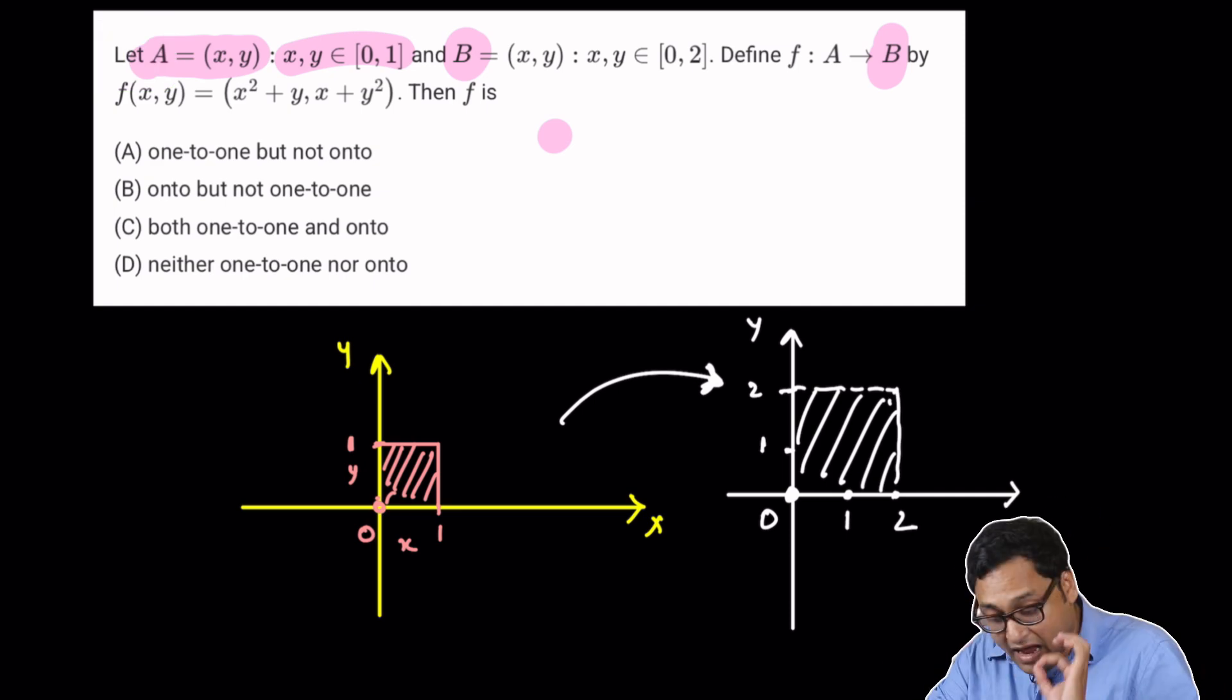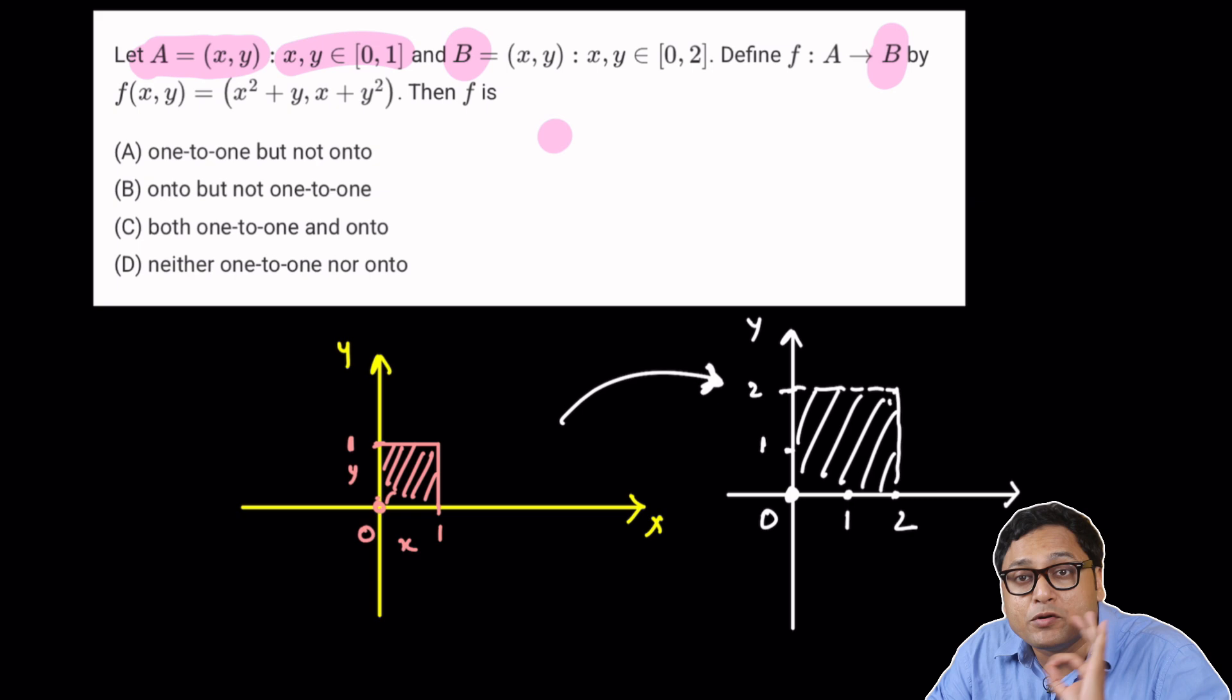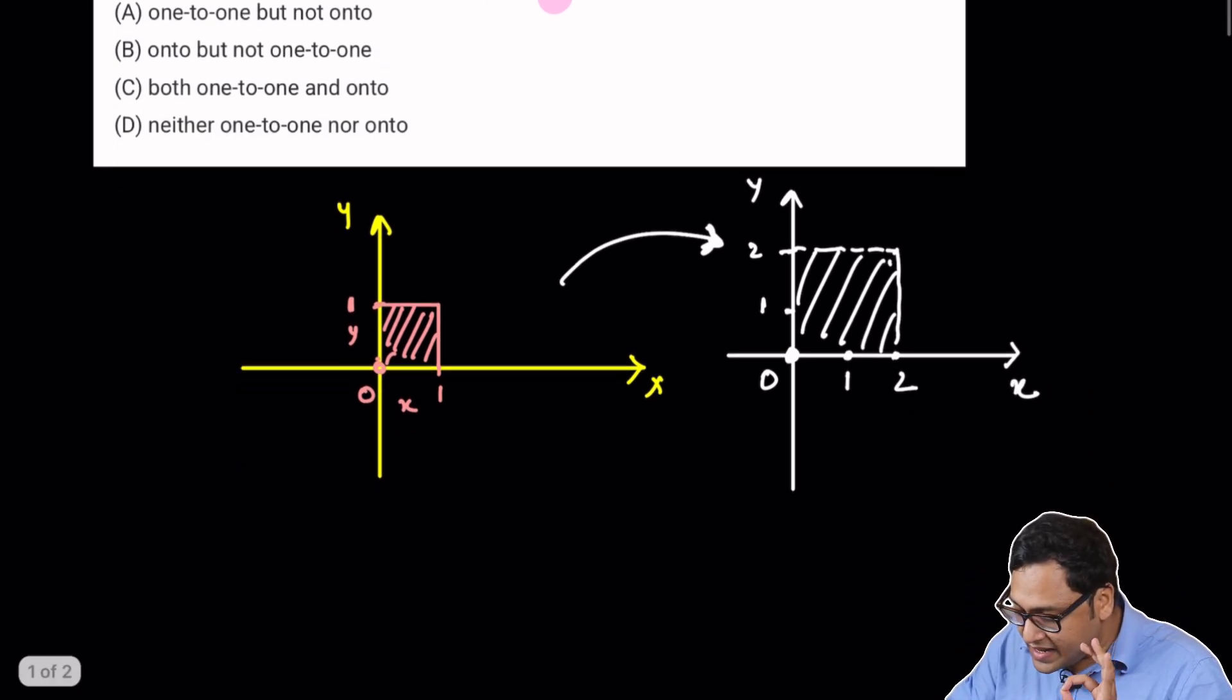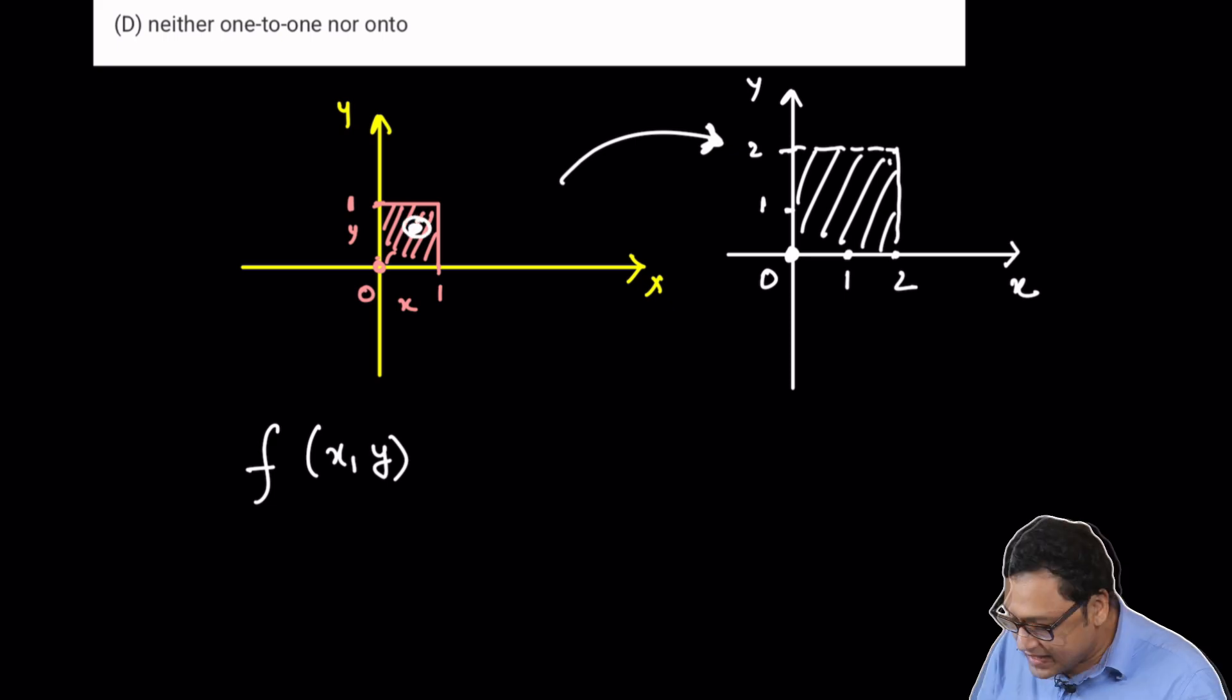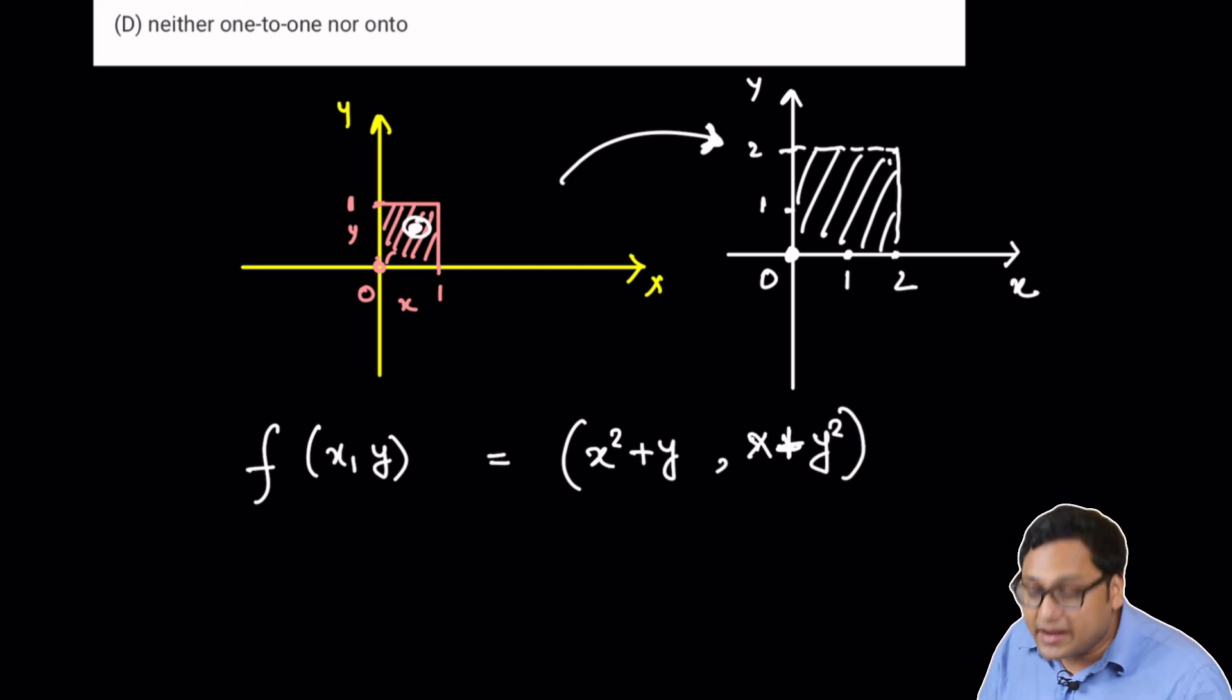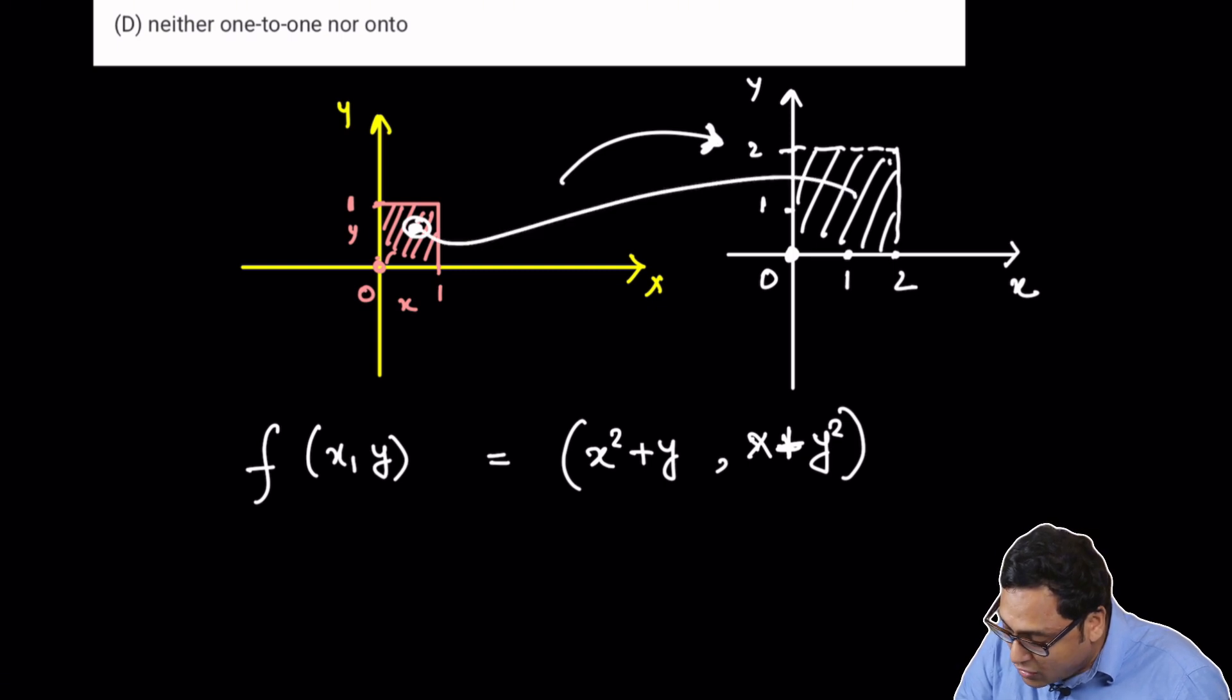Okay, that's great. Now, how do we compute the function? So if you take x, y as the input value, some x, y from here, then what you do is you would calculate x squared plus y comma x plus y squared. Whatever that number is, that coordinate is, that is the output value.